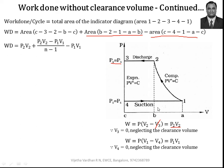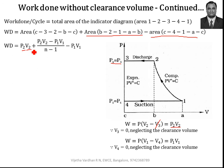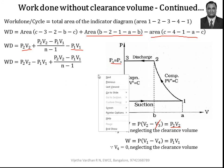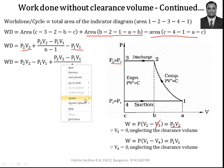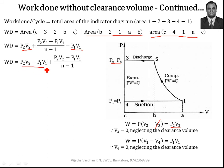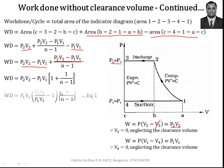Upon simplification, we rearrange by taking common parameters P2·V2 and P1·V1. The expression becomes: P2·V2 − P1·V1 + (P2·V2 − P1·V1)/(N − 1). Taking the LCM and P1·V1 as a common factor, we can deduce and simplify this expression, which is named equation number one.